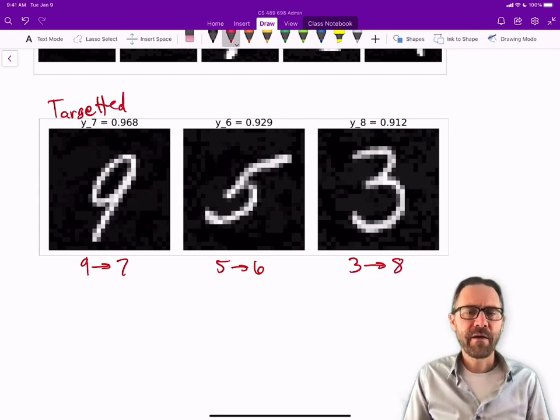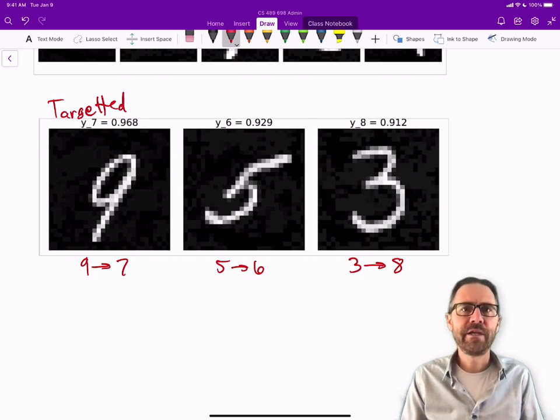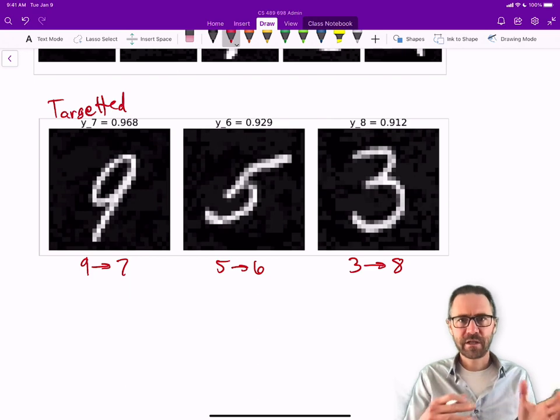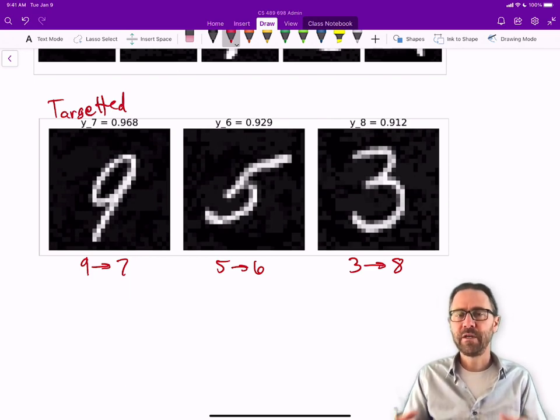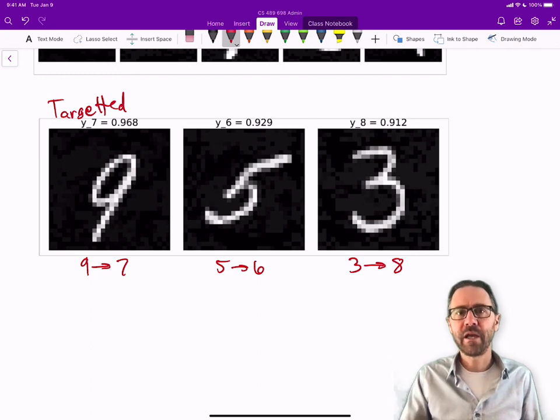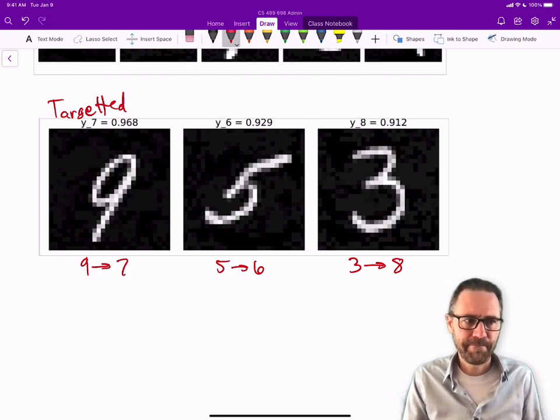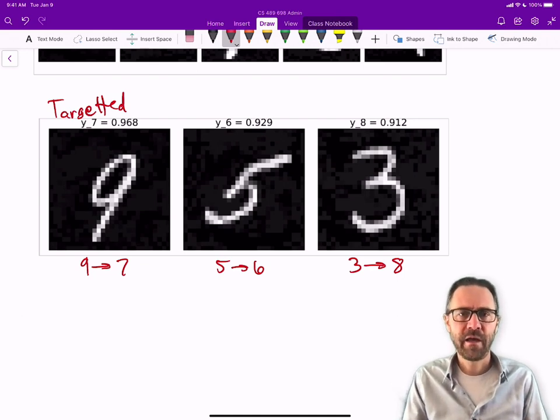I hope I've shown you how important this problem is and how easy it is to fool classification networks into misclassifying the input from adversarial examples. The problem is people can target your network and generate inputs specifically to fool it, and that's a dangerous thing. It's an open problem in AI right now.